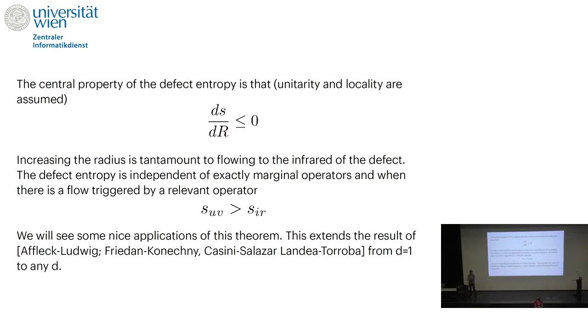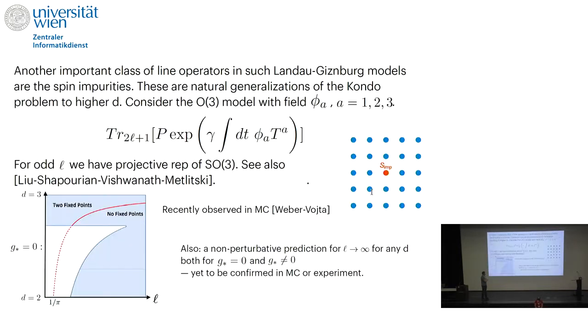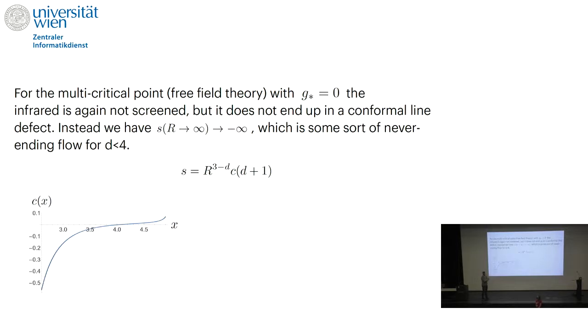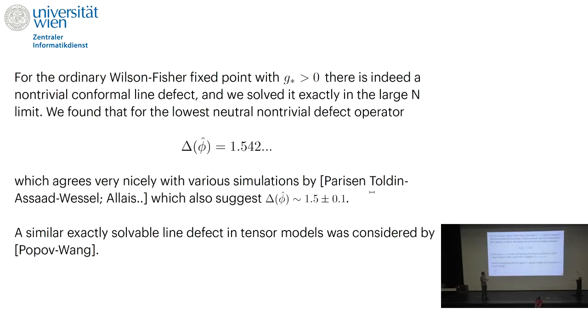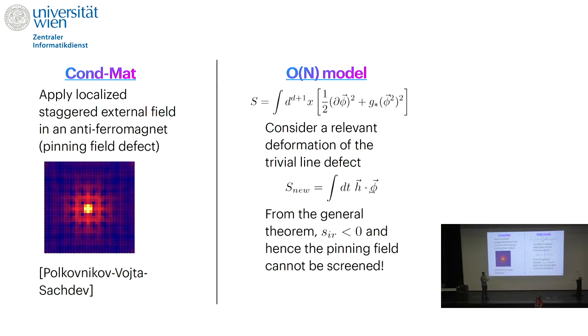So if I understand right you said that this sort of RG flow that goes on forever to minus infinity you don't expect it to be possible if the theory has no marginal deformations? We believe that this kind of behavior that an impurity does not end up at the fixed point and the entropy continues to grow ever more negative is only possible in theories with a moduli space of vacua like free field theory. Free field theory has a moduli space of vacua given by arbitrary values of phi. What physically happens is that you put this external staggered magnetic field but because there is no potential in the bulk it just keeps populating the whole bulk and puts the bulk in a new phase—spontaneous symmetry breaking everywhere. I believe in theories with a potential it should not be possible.